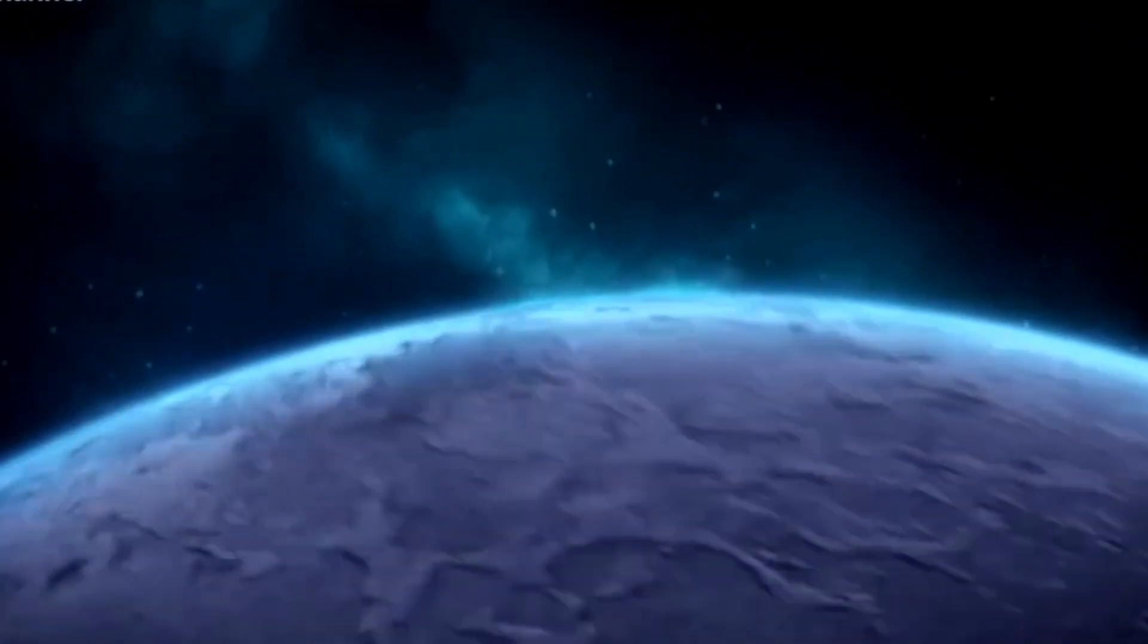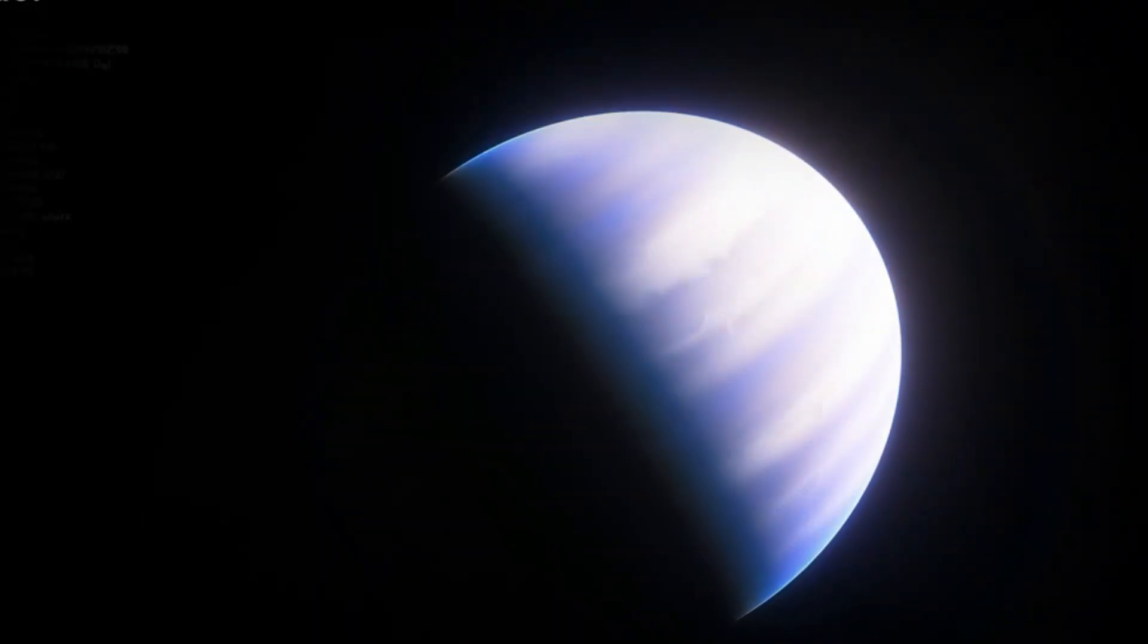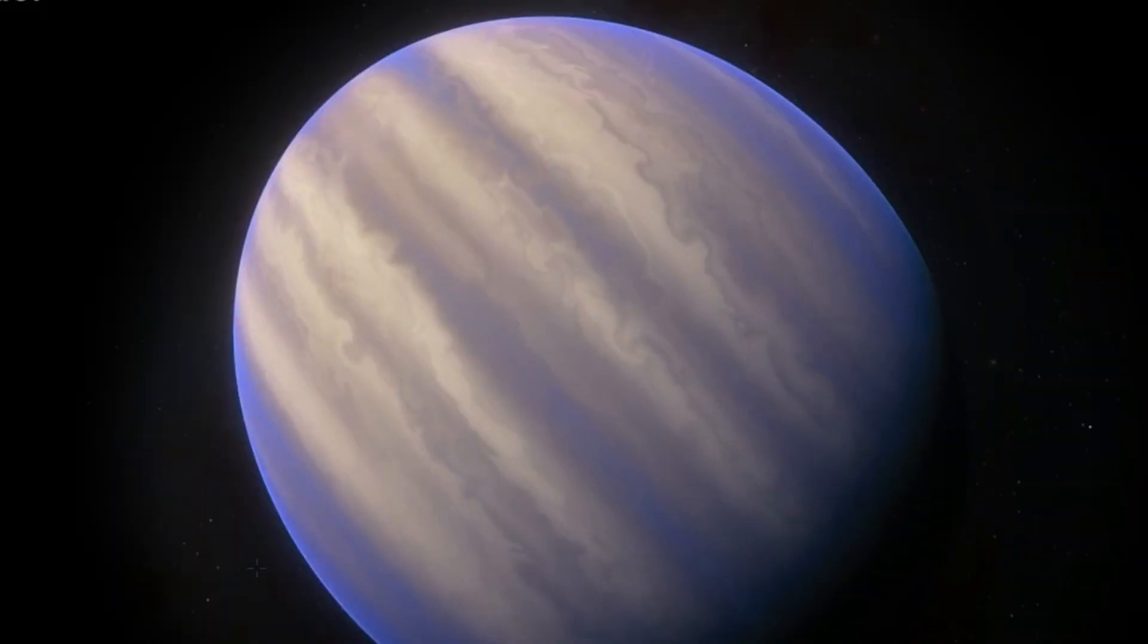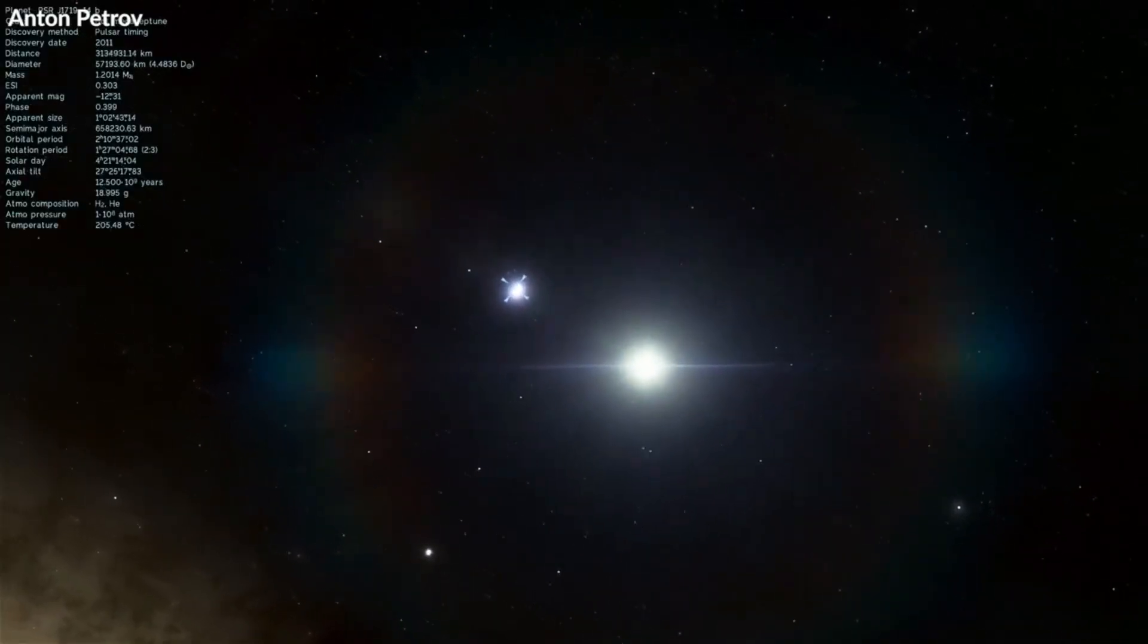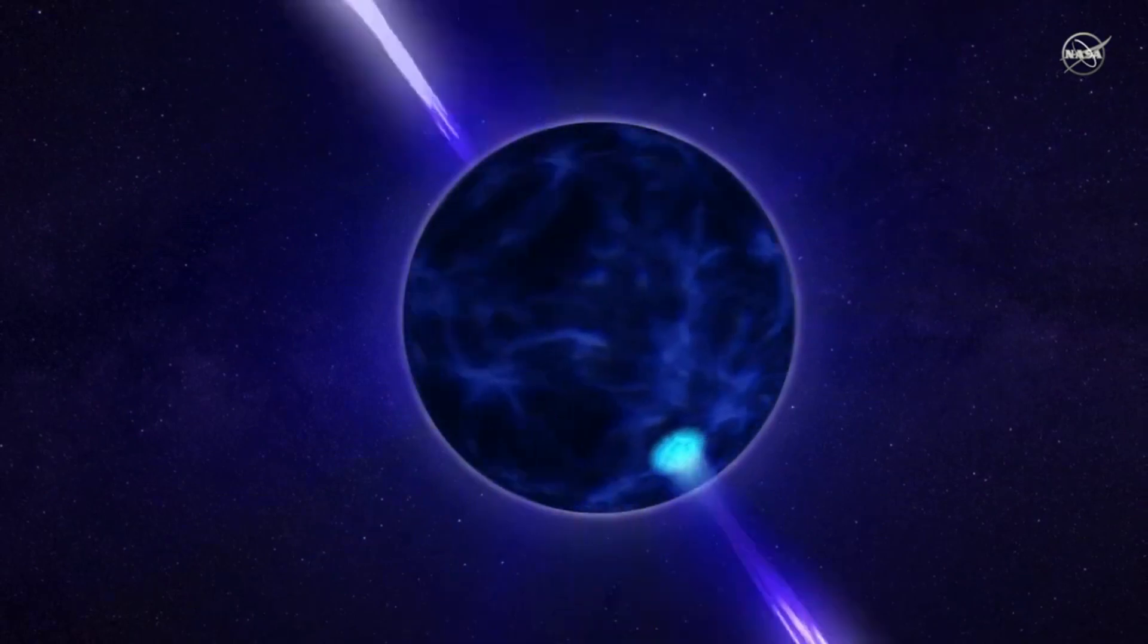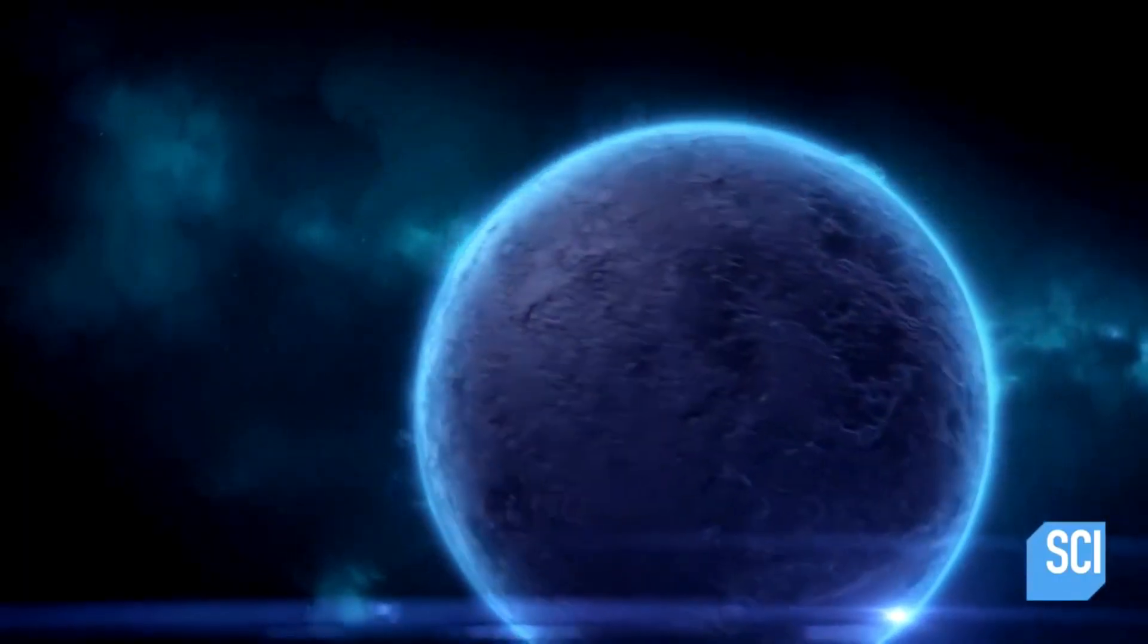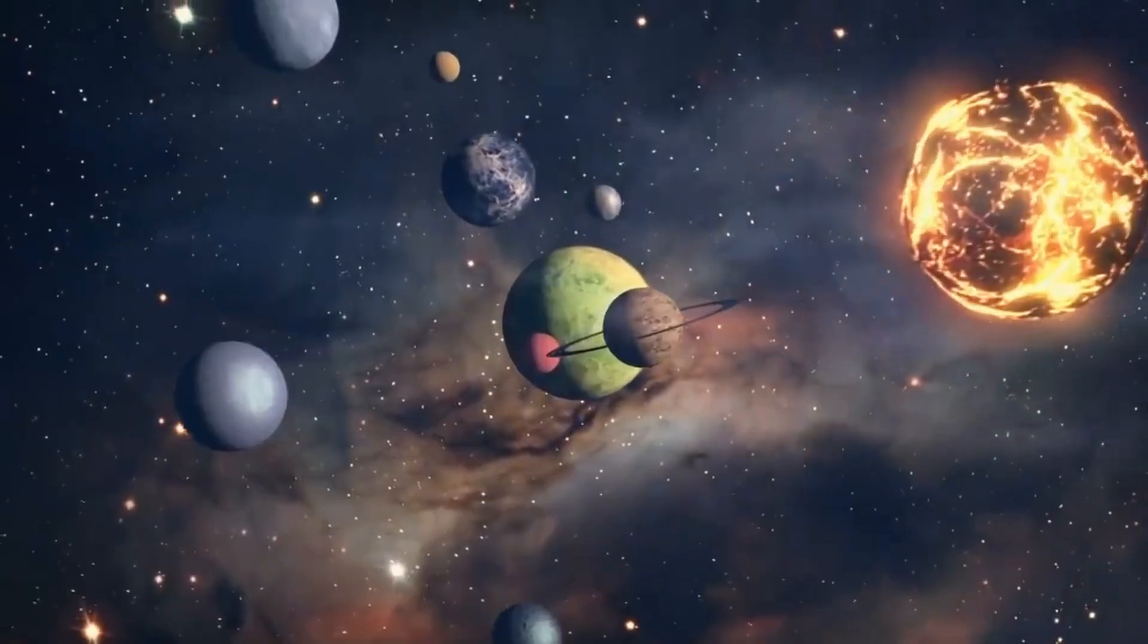What exactly is a black hole? A black hole is a region of space where gravity is so strong that even light cannot escape. Because stuff has been compressed into a small space, gravity is extremely powerful. This can occur when a star dies. People cannot perceive black holes because no light can escape. They are unnoticed. Space telescopes equipped with specialized equipment can aid in the discovery of black holes. Special technologies can observe how stars in close proximity to black holes behave differently from other stars.